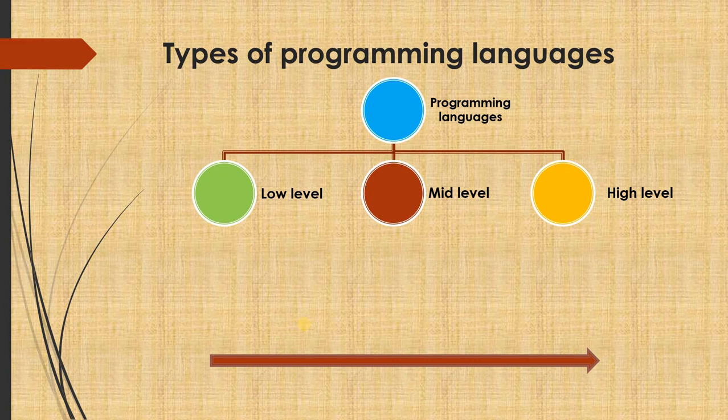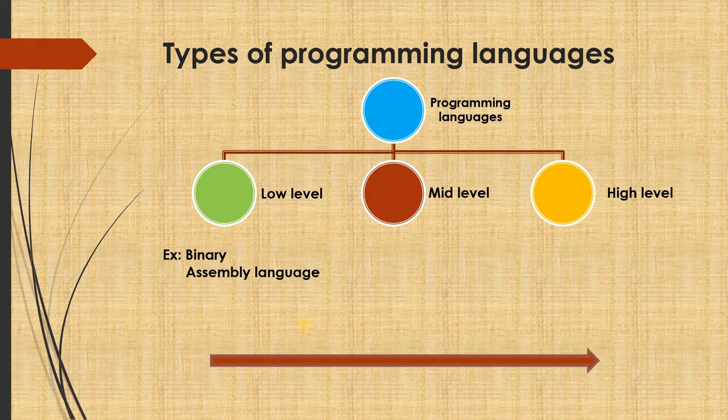If you look at various types of programming languages, they can be considered low-level language, mid-level language, and high-level language. For the low-level language, examples include binary language or assembly language. A machine can understand only binary language — it communicates only in terms of 0s and 1s, which is extremely difficult for a human being to understand. Another example of low-level language is assembly language, where instead of 0s and 1s, we use keywords called mnemonics.